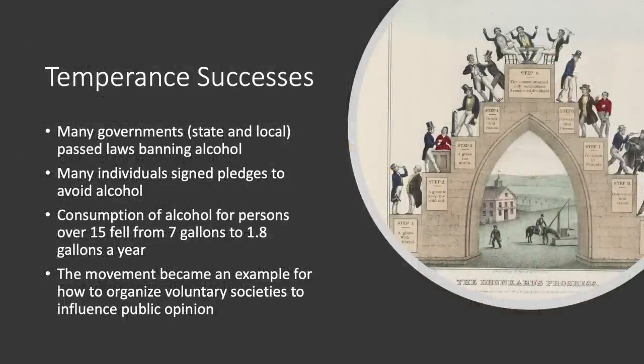In many ways the movement was successful. Many state and local governments passed laws banning alcohol, though many were later repealed. On an individual level, many people signed pledges to avoid all alcohol, becoming known as teetotalers. During this period, consumption of alcohol for persons over 15 fell drastically from 7 gallons a year to 1.8 gallons. Beyond these results, the temperance movement was important because it became an example of how to organize voluntary societies to influence public opinion — knowledge that spread to other movements.